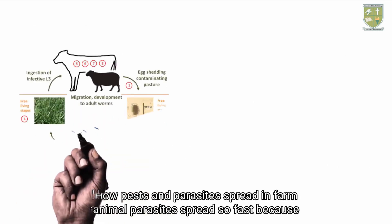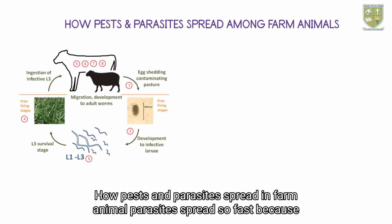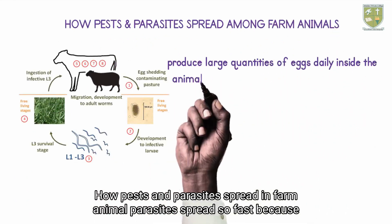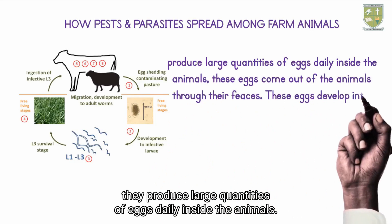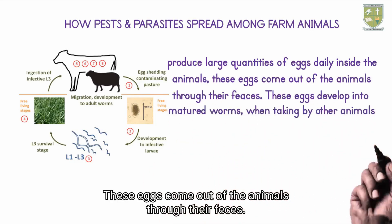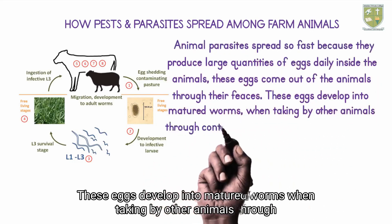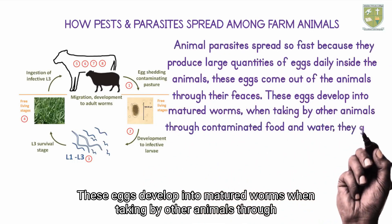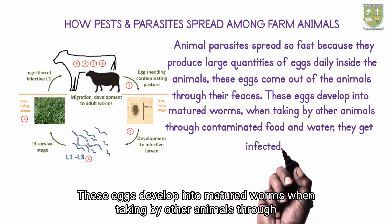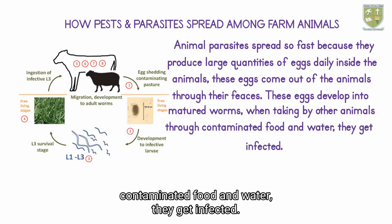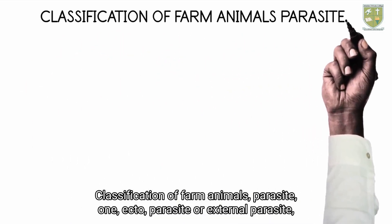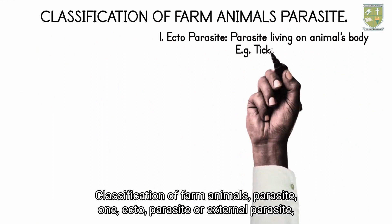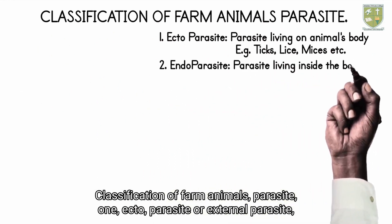Parasites spread so fast because they produce large quantities of eggs daily inside the animals. These eggs come out of the animals through their feces. These eggs develop into matured worms when taken by other animals through contaminated food and water, and those animals get infected.